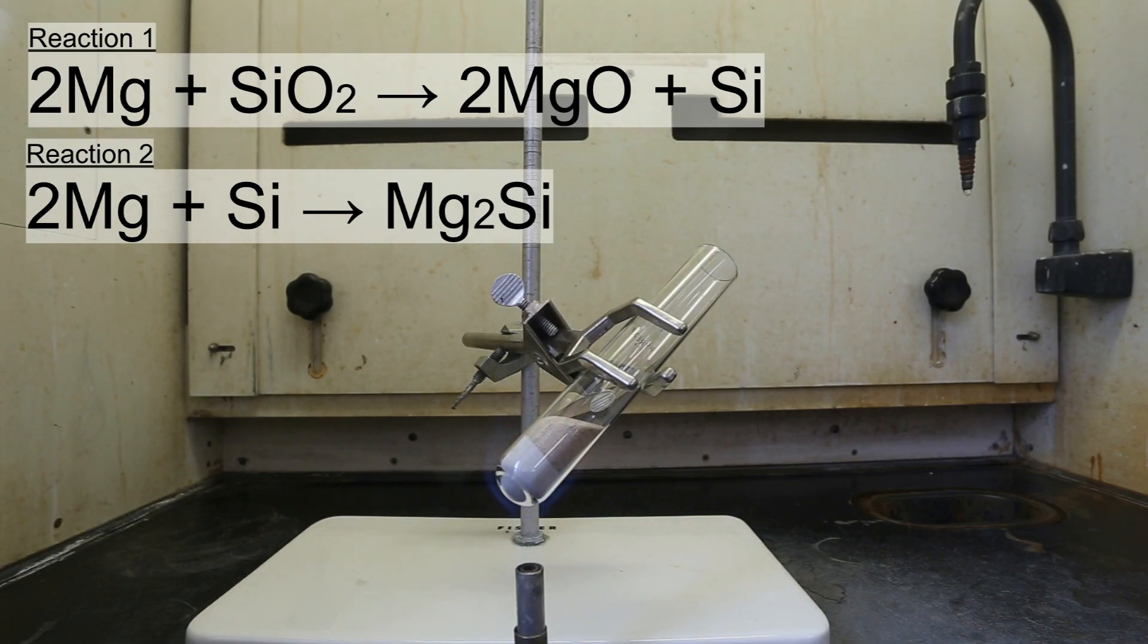When the magnesium burns, instead of taking oxygen from the air, it strips the oxygen from the silicon dioxide molecule. This will produce magnesium oxide and silicon metal. Depending on how fine your magnesium powder and sand are, this reaction can be quite violent.